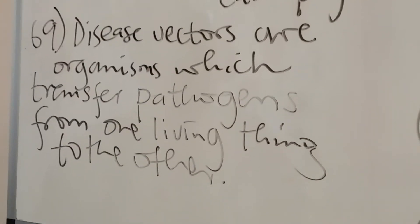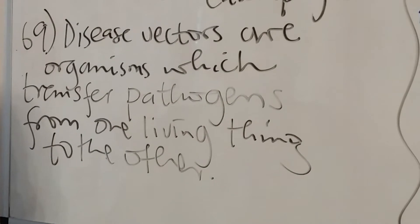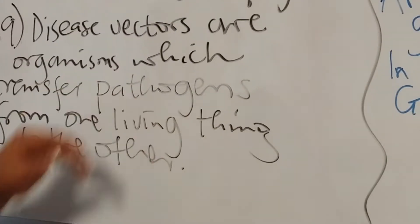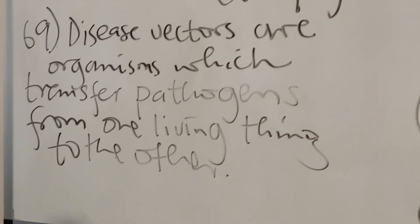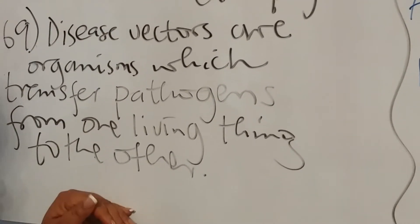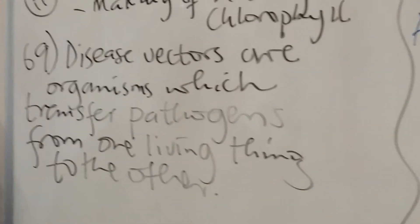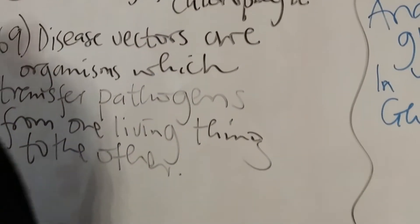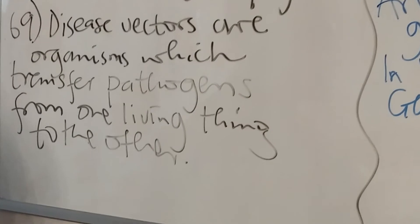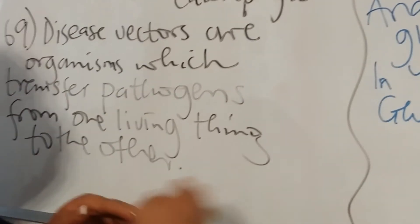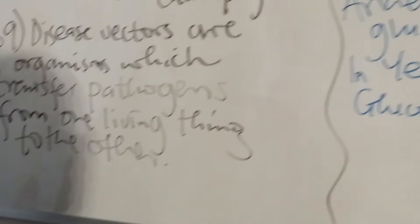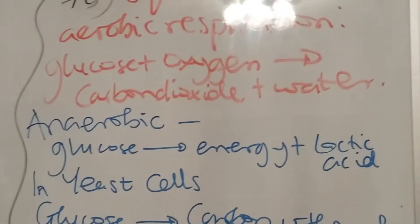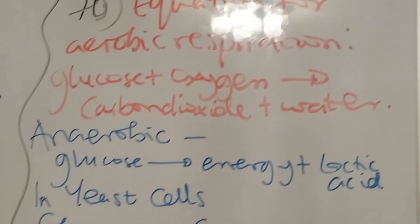Question 69 asks: what are disease vectors? Disease vectors are organisms which transfer or carry pathogens from one living thing to another. These organisms do not cause the disease themselves, but they move the microorganism or pathogen which causes the disease from an infected organism to another — just like a mosquito transferring plasmodium from one infected person to another.